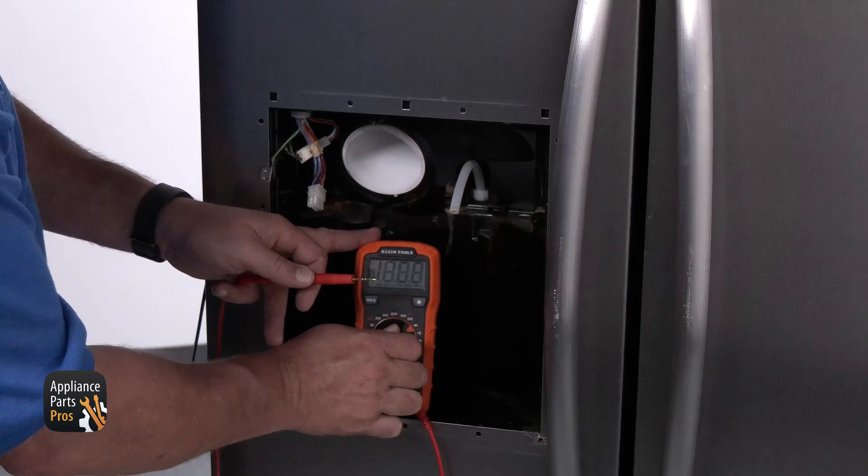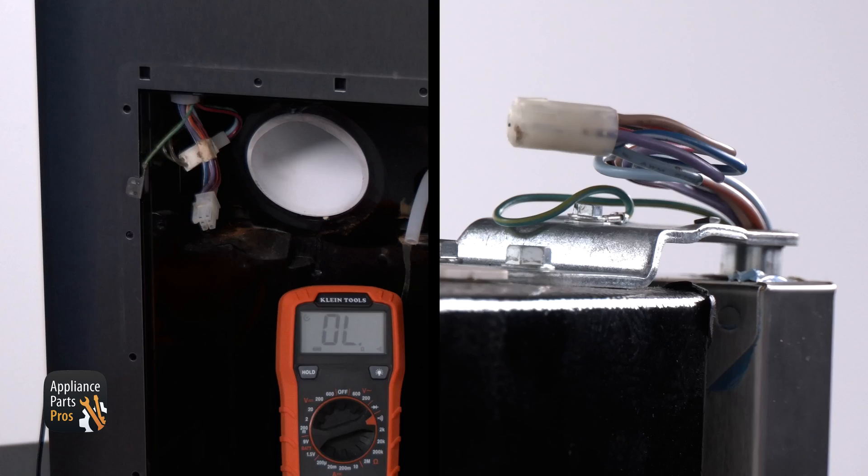Now, let's set our multimeter to continuity. We need to test each wire from the connector at the dispenser and the wire connector at the top of the door.